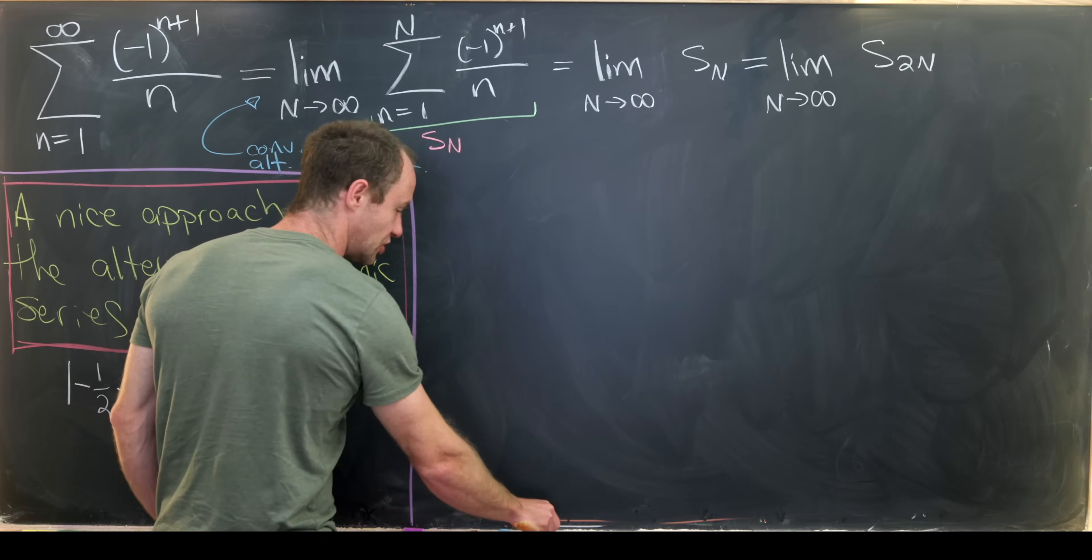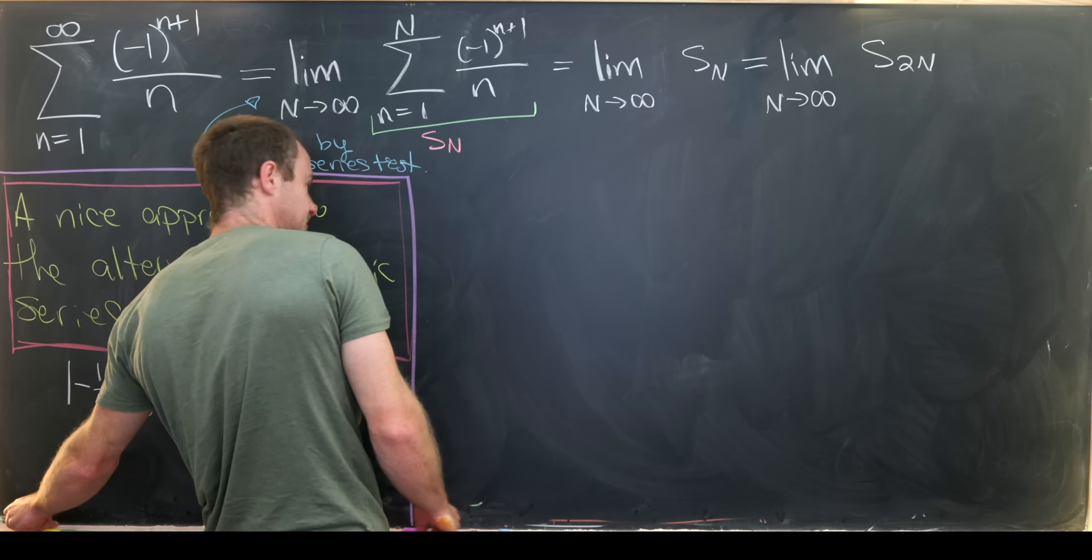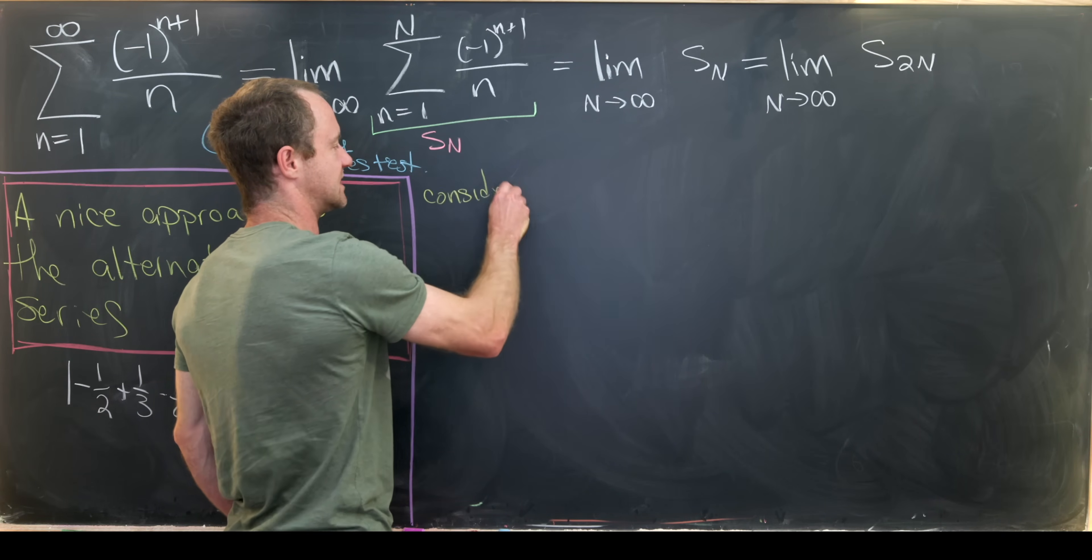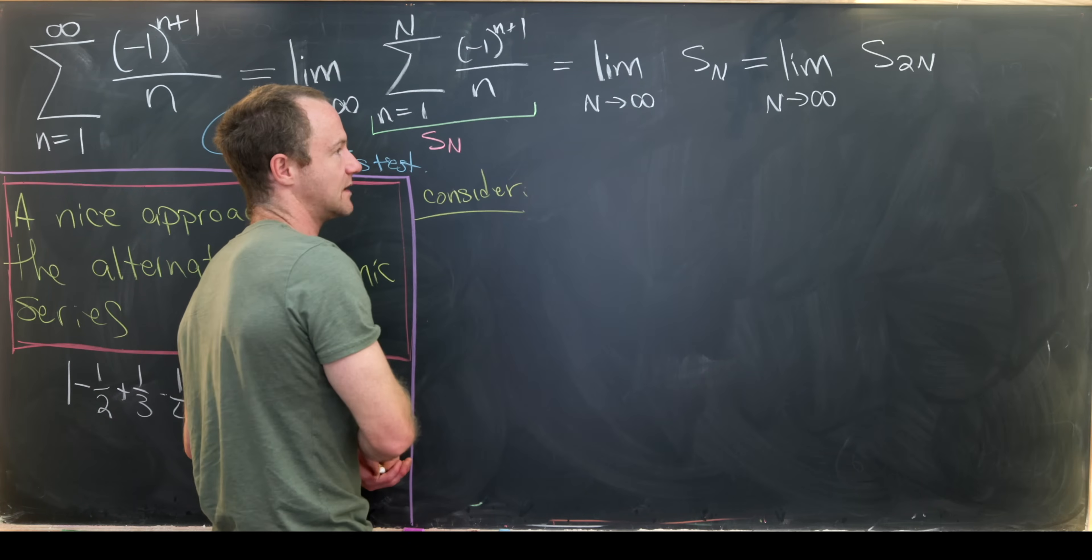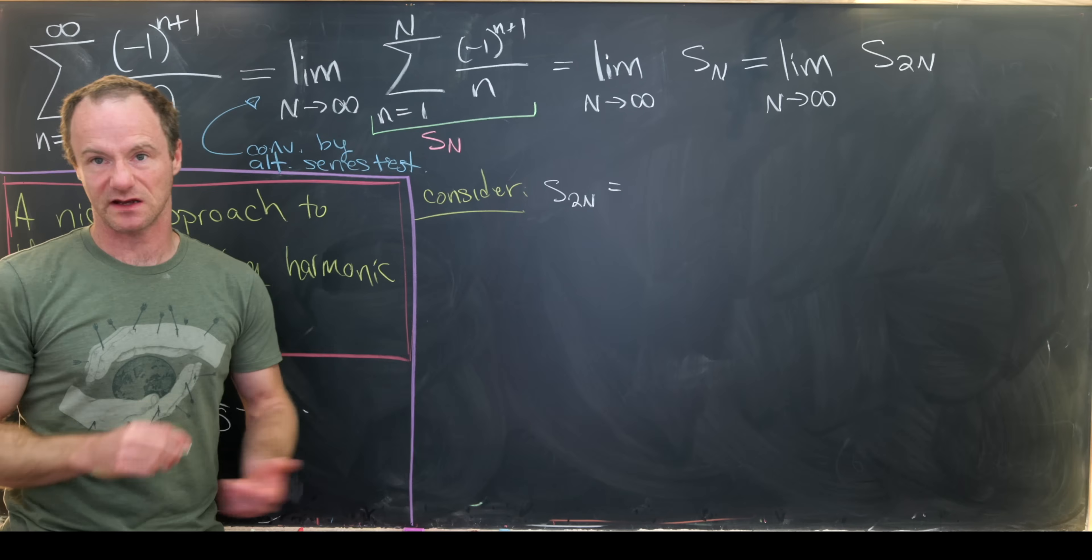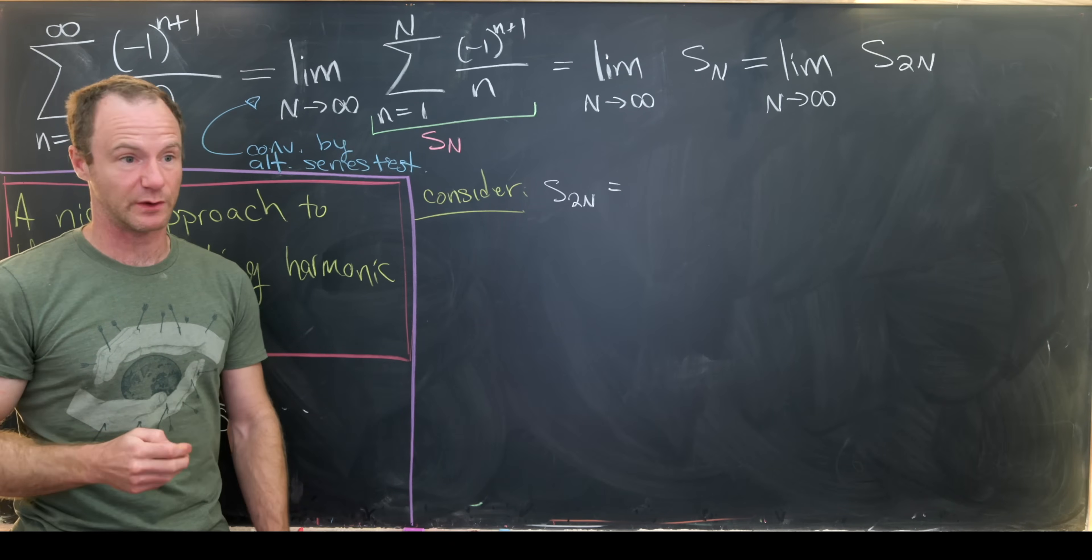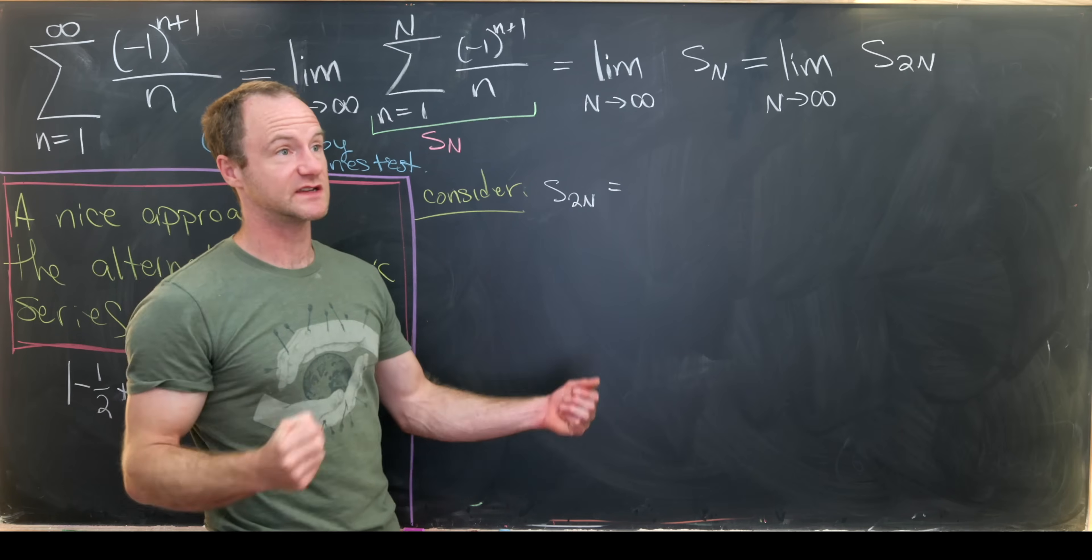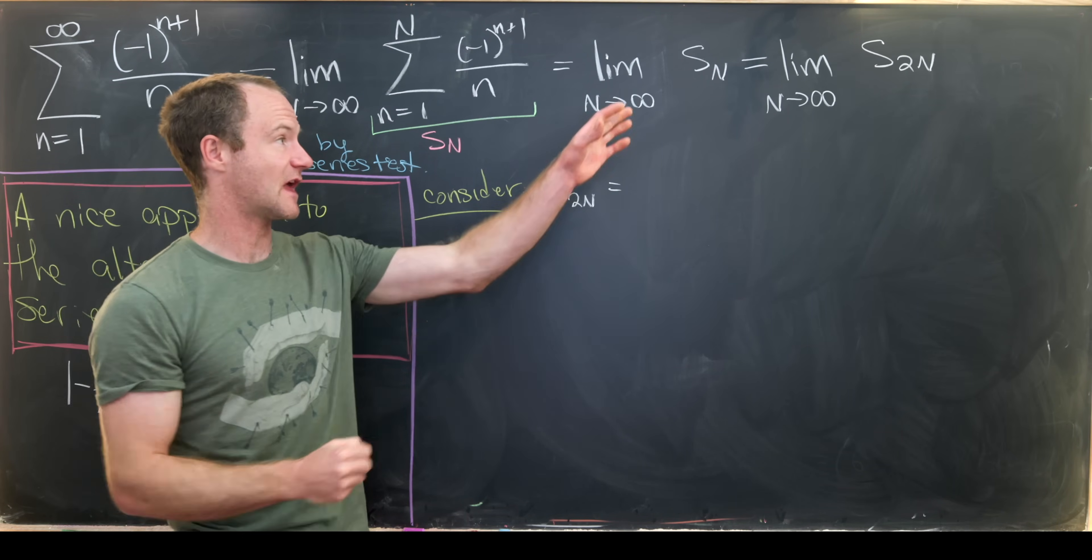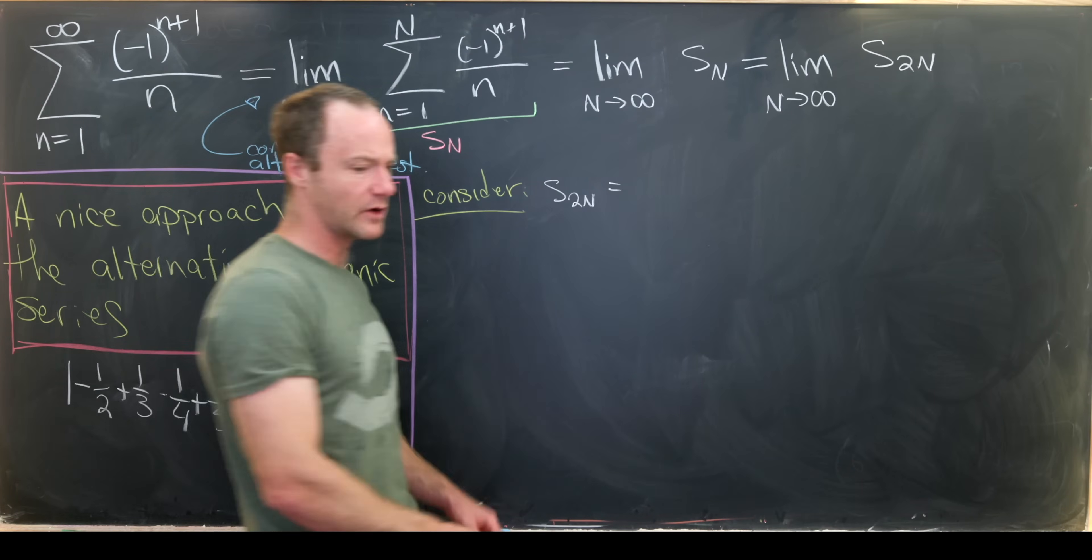But now let's just look at that subsequence. So let's maybe do that on the side right here. So let's consider this subsequence of even terms S sub 2N. So this is a finite sum, which means we can pretty much do anything we want to it in terms of reassociate and recombing. And we won't mess anything up.